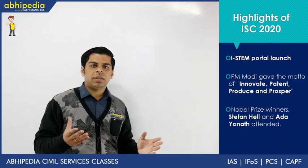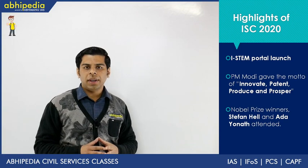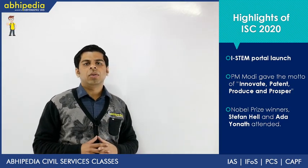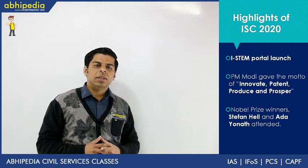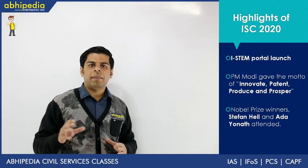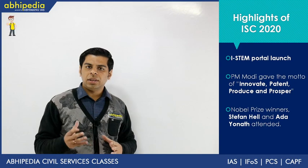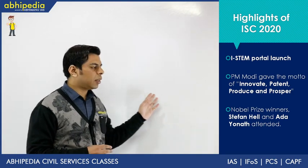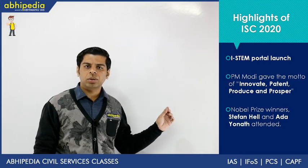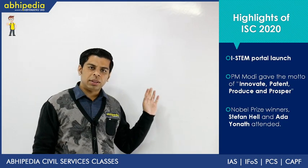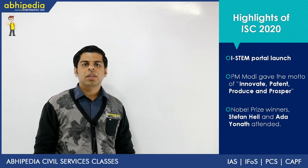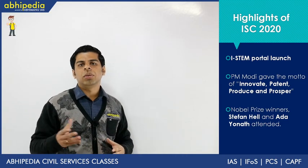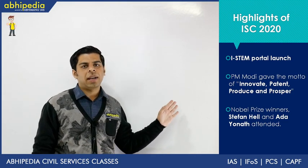Like always, these Science Congresses are attended by Nobel laureates. This year the Nobel laureates were Stephen Hell and Ada Yonath. Stephen Hell won the Nobel Prize in Chemistry in 2014 for his revolutionary fluorescent microscopy technique, popularly known as STED microscopy. Ada Yonath in 2009 shared the Nobel with our own Venkatraman Ramakrishnan — both worked on the structure of ribosomes, which in biology are our protein factories. Make sure to revise cell biology, as UPSC can draw distant linkages and surprise you with options.